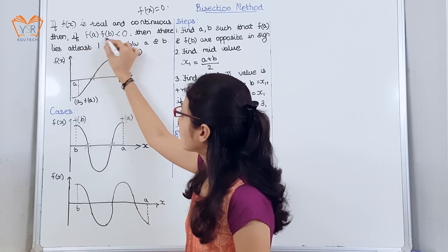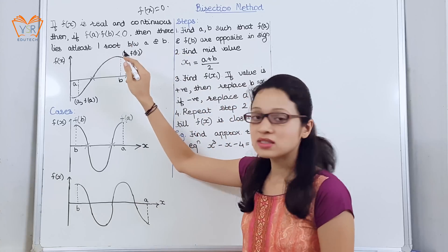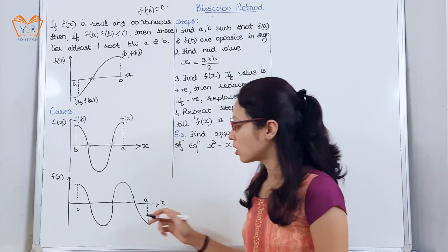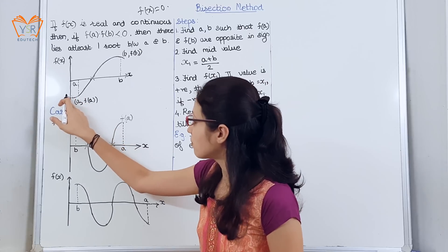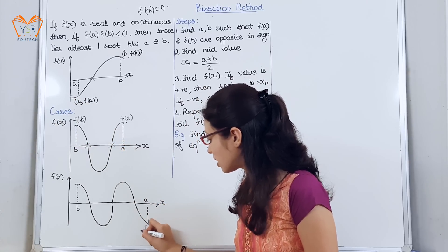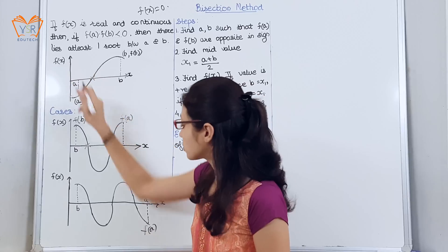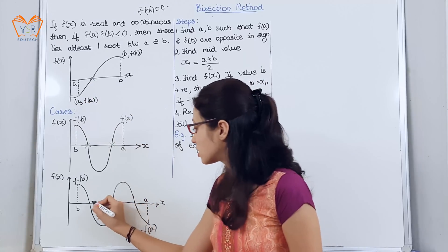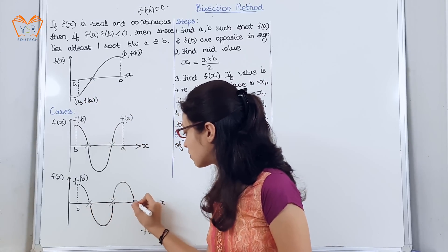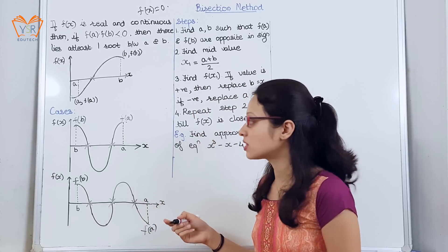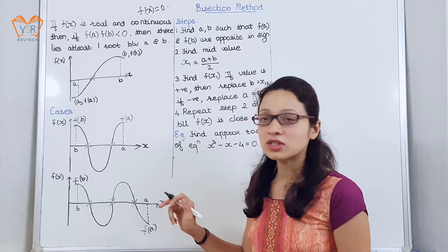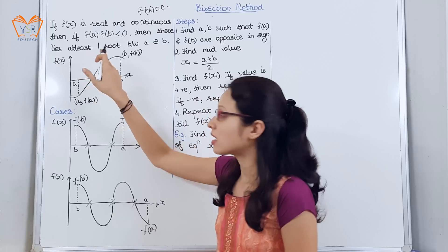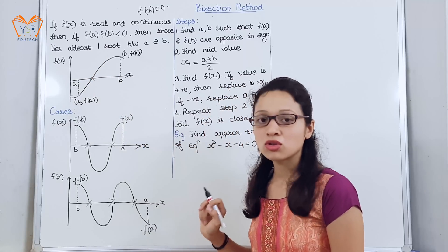We saw that if f(a) × f(b) is less than 0, at least one root lies in the interval. 'At least one' means there may be multiple roots also. Here f(a) is negative and f(b) is positive — in one case only one root lies, but in another case three roots can lie between the interval a and b. These cases only confirm that the condition f(a) × f(b) < 0, wherein at least one root lies in the interval, is not violated.